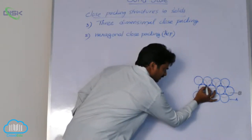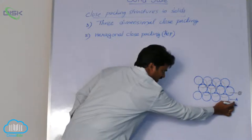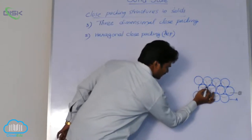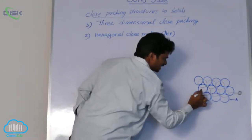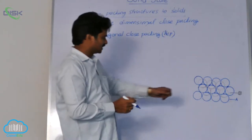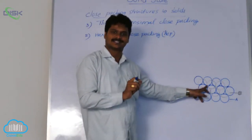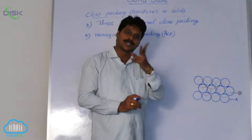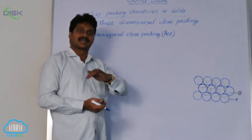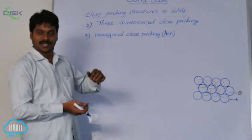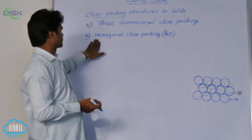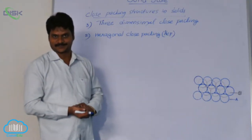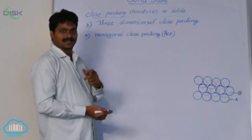The triangular voids of the first layer — layer A — are having a downward apex. But the triangular voids of the second layer B are having a vertex upward, meaning this void is not covered, only the other void is covered. So we have two types of voids: one is tetrahedral void, and the other one is octahedral void.